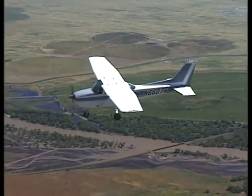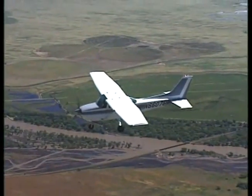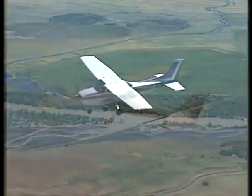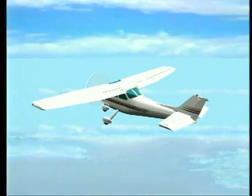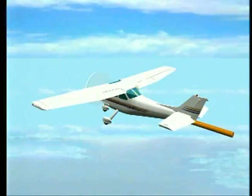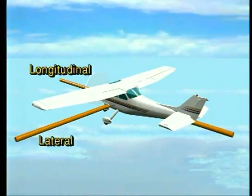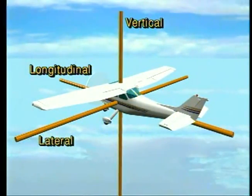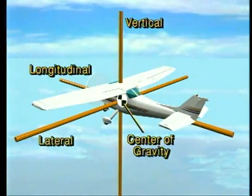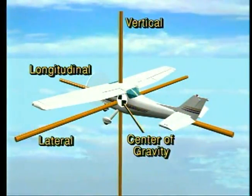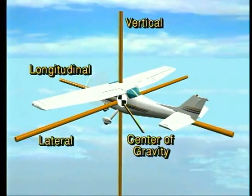To understand how this is accomplished, we must look at stability in relation to the center of gravity and three axes of flight. Aircraft movement takes place around one or more of the three axes of rotation: the longitudinal, lateral, and vertical axes. The common reference point is the airplane's center of gravity, or CG, which is the theoretical point where the entire weight of the airplane is considered to be concentrated. All three axes pass through this point, so the airplane always moves about its CG.